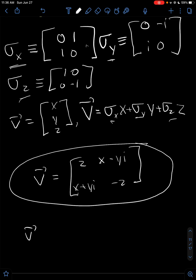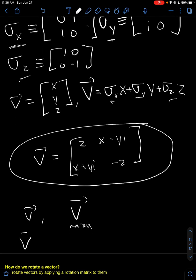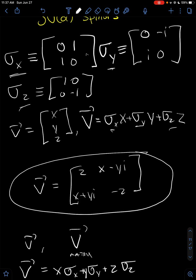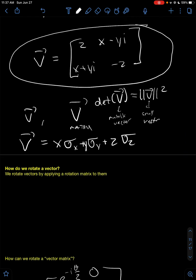So a brief rundown of what we just did: we have some vector, and we want to make a matrix version of the vector. To get this matrix version, we just take a superposition of the Pauli spin matrices with the vector components. Simple enough. Now, why are we doing this? Why are we building a new matrix in this way? Because it turns out that the determinant of the vector matrix equals the length of the vector squared. So the length of the small vector squared gives you the determinant of the matrix vector, and vice versa. That's why we're expanding it in this particular way.